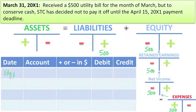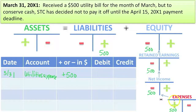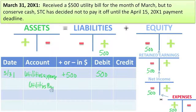Let's do the journal entry. We show that we have more expense — utilities expense, $500 more. When we have more expense, that's a debit entry, meaning left. And we have more liability. This liability is a payable to the utility company, so we call it utilities payable — $500 more.